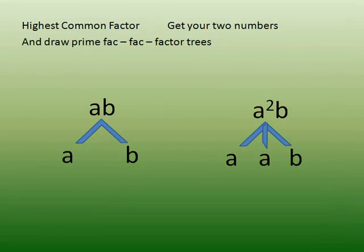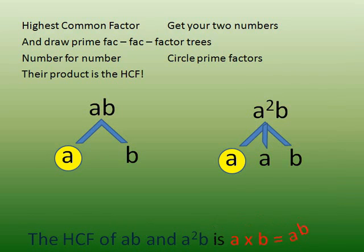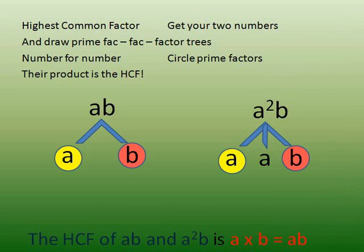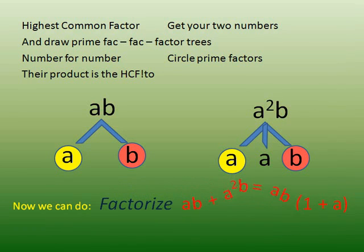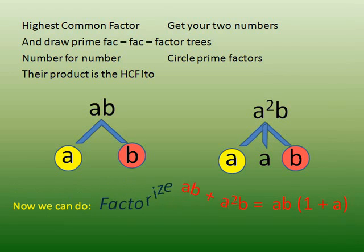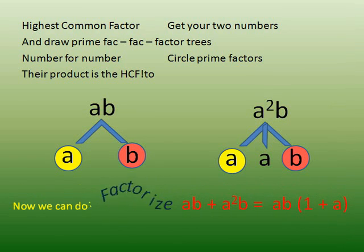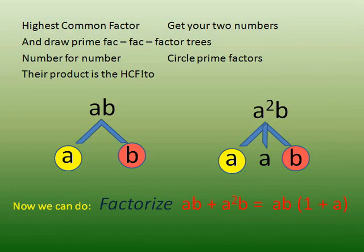Highest common factors, get your two numbers and make it back, back, back to trees. Number for number, circle prime factors. That product is the HCF. Highest common factors, get your two numbers and back, back, back to trees. Number for number, circle prime factors — that product is the HCF.